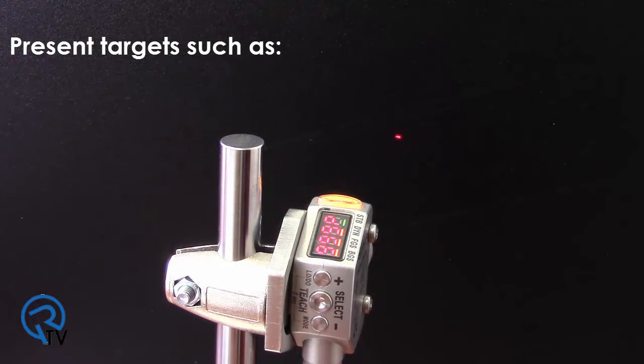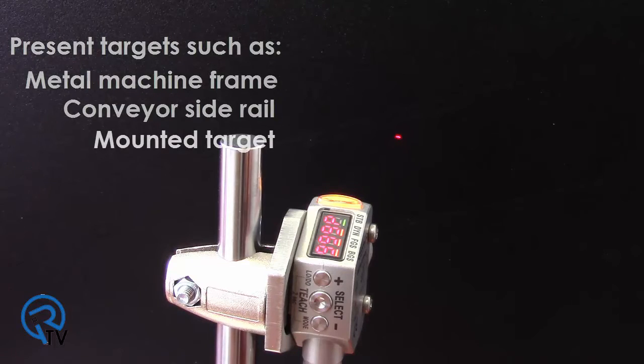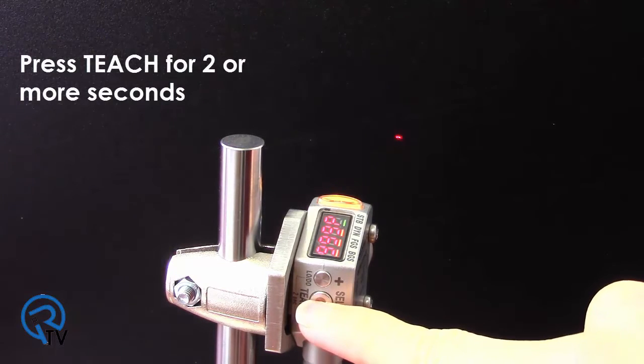Present a steady target such as a metal machine frame, conveyor side rail, or mounted target. Press the Teach button for two or more seconds.